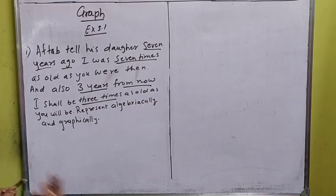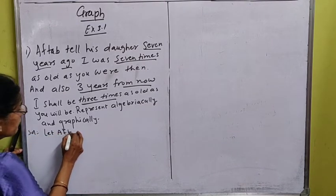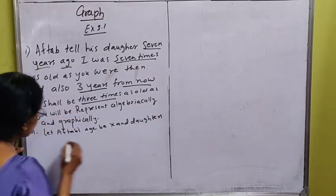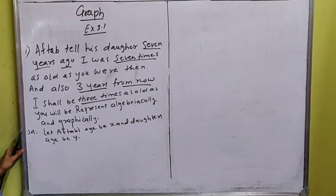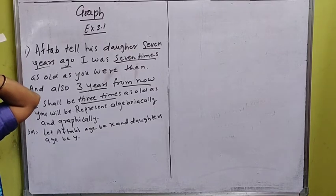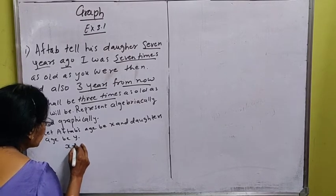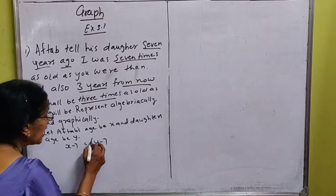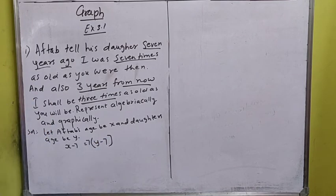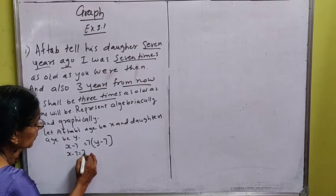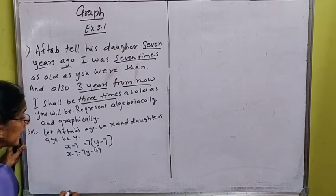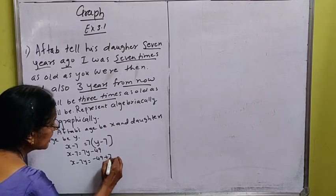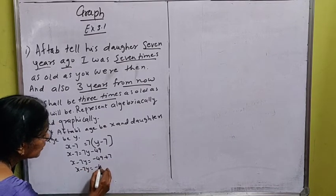Let Aftab's age be X and the daughter's age be Y. Seven years ago means seven years back, so we subtract 7 from both ages. Aftab was 7 times the daughter's age, so: X − 7 = 7(Y − 7). This gives X − 7 = 7Y − 49, so X − 7Y = −49 + 7, which simplifies to X − 7Y = −42.